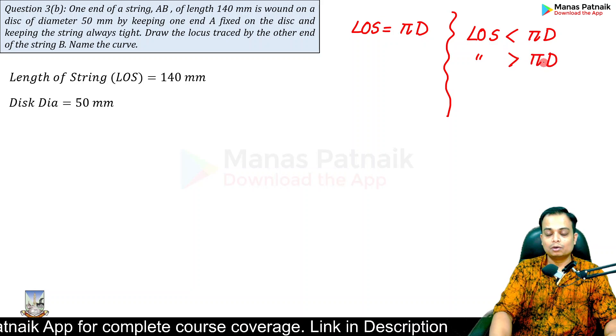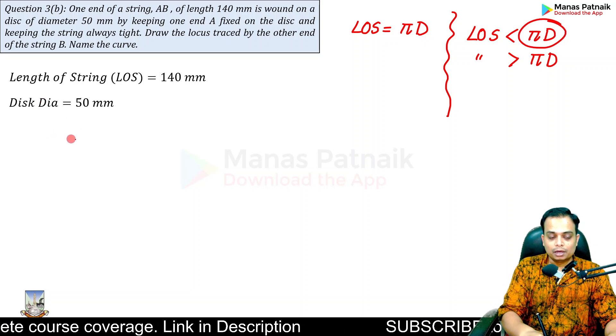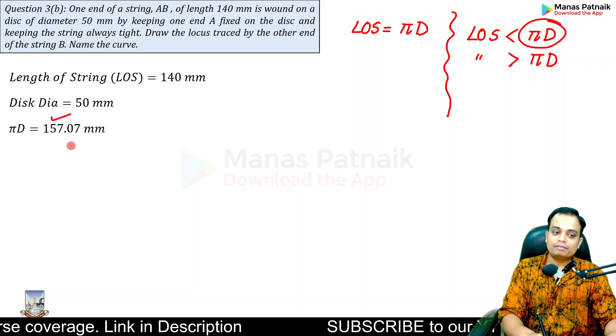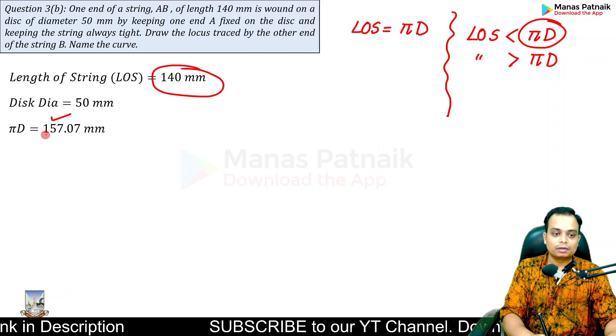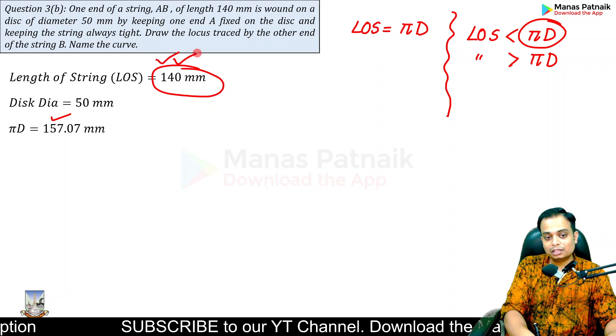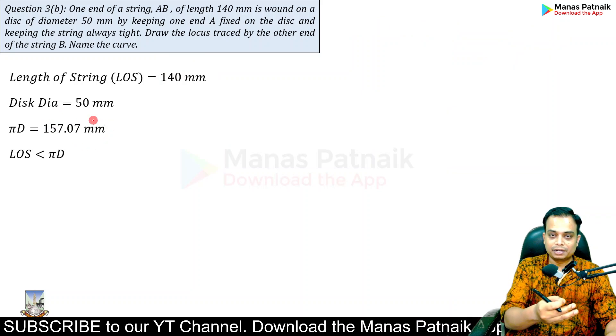Let us calculate πD. On working it out we see that it is 157.07, and here is the length of string 140. You can clearly see that this length of string is lesser than the circumference.